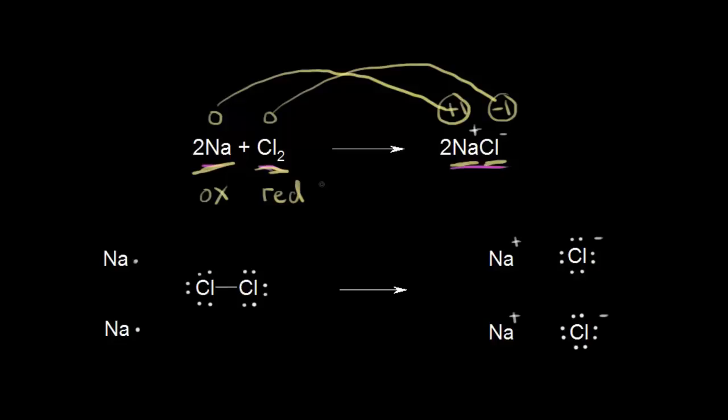Before we assign oxidizing and reducing agents, let's talk about this again using valence electrons. There are two ways to assign oxidation states. For sodium, if electrons are represented as dots, you assign an oxidation state by thinking about how many valence electrons the atom normally has and subtracting how many electrons you have in your picture. Sodium is in group one, so it normally has one valence electron, and that's exactly what we have in the picture. One minus one gives an oxidation state equal to zero.